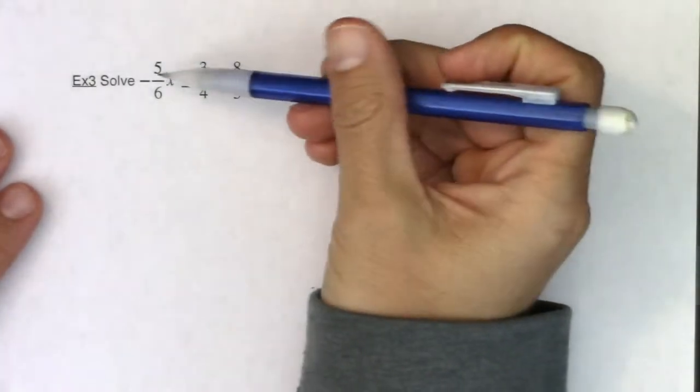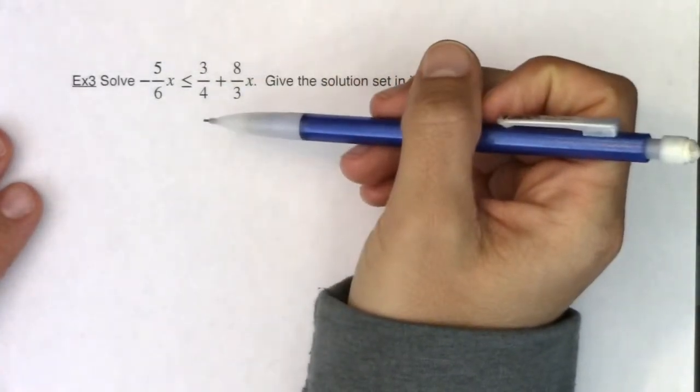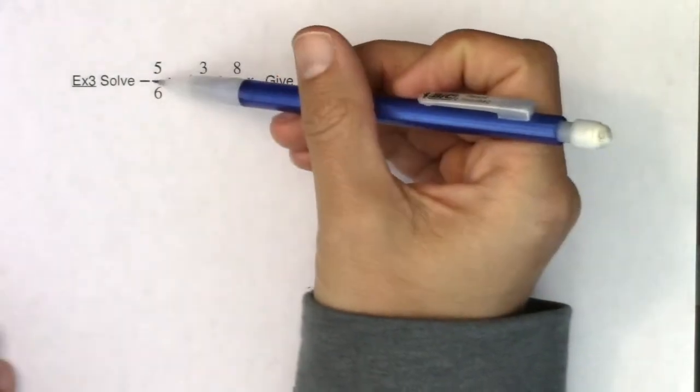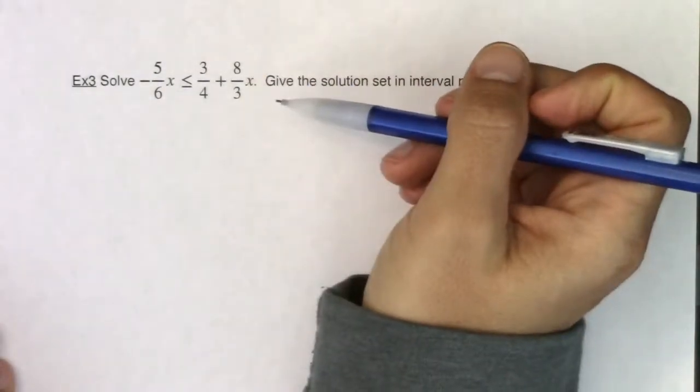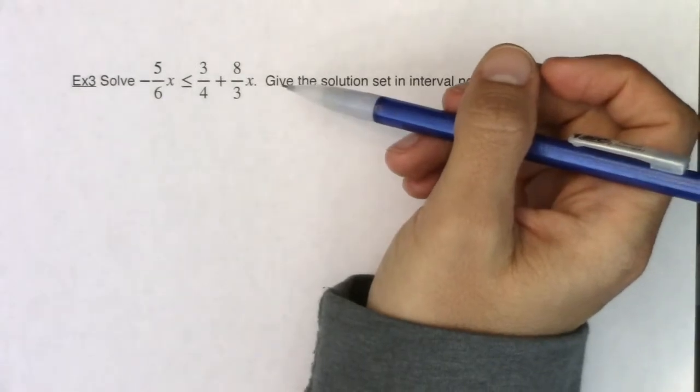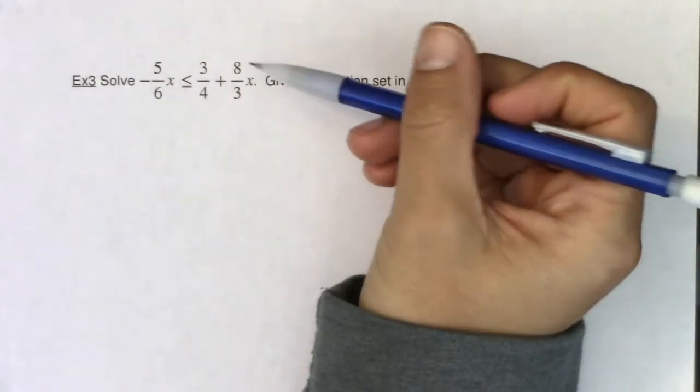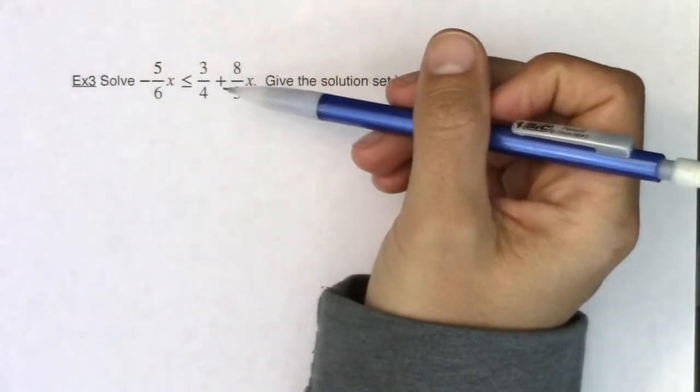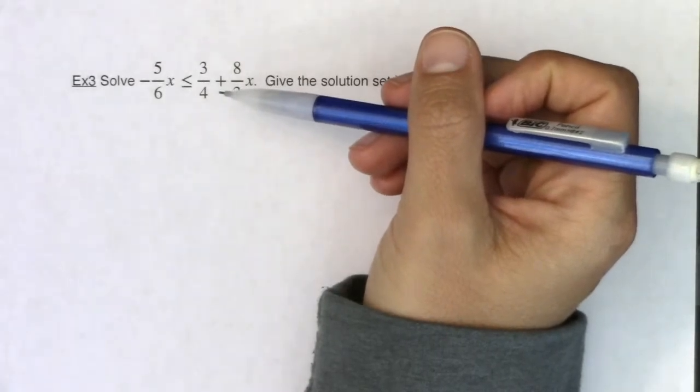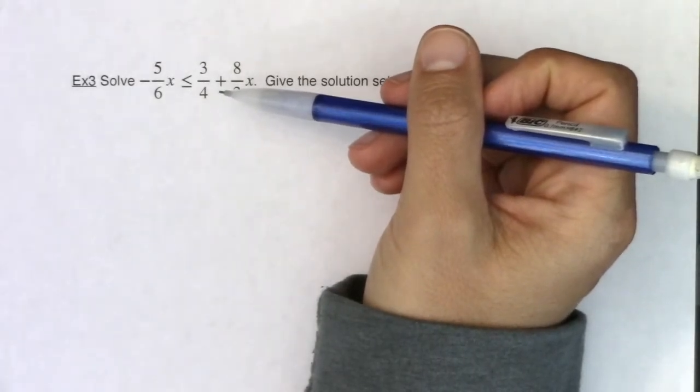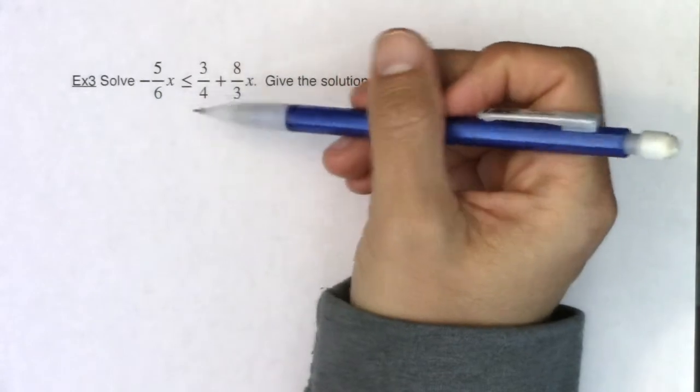Now, if you're not a big fan of fractions, you can multiply every term in this inequality by the LCD and knock them out. We had talked about that method a few sections back. Whenever you have fractions in an equation, you can multiply by the LCD and knock the fractions out, and you can do the same thing in an inequality.